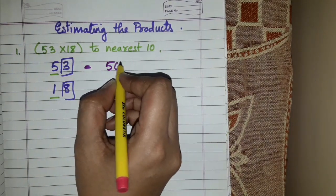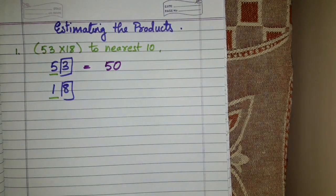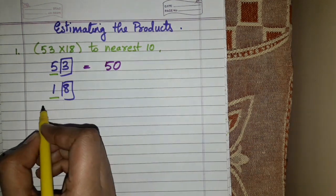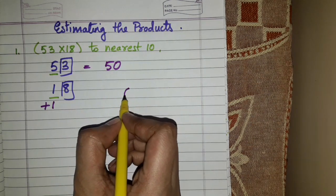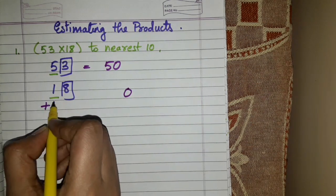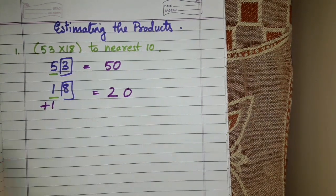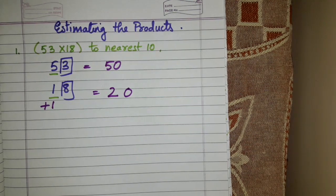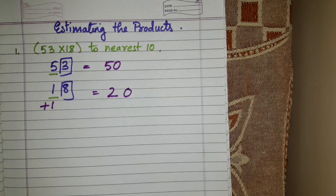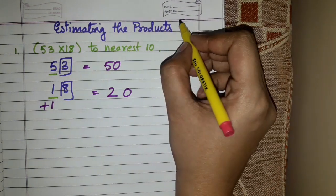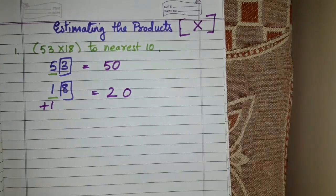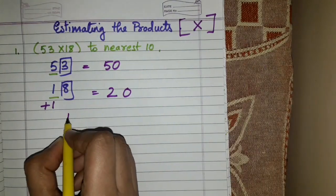The number will be 50. And 18 — 8 is bigger than 5, so this 8 will give plus 1 to the tens digit and itself will become 0, so 1 plus 1 gives 20. These are the two new numbers formed after rounding off, and we have to find the product — product means multiplication. Let's write these two numbers.